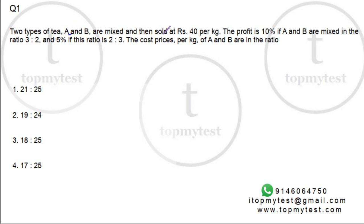Let's see what this is. Two types of tea A and B are mixed and then sold at 40 per kilo. So sales price is 40 per kilogram. The profit is 10% if A and B are mixed in the ratio 3 is to 2, and 5% if the ratio is 2 is to 3.